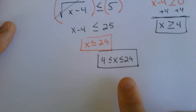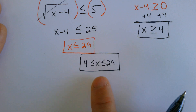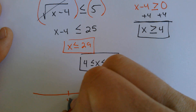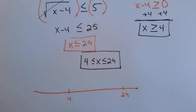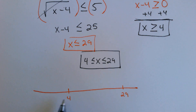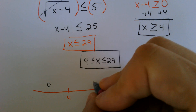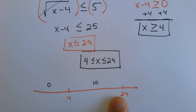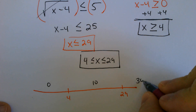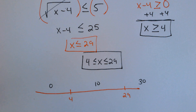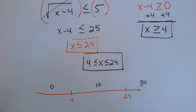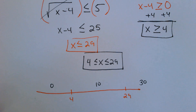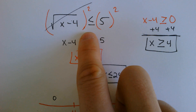However, this is not going to work every single time, and you need to do something called a number line test. You need to put 4 on the number line and 29 on the number line. Depending on the complexity of the problem, you would need to test out all three zones. So you would need to pick out a number smaller than 4, like 0; a number in between 4 and 29, like 10; and a number bigger than 29, like 30. You need to test all three out to see if they work. You should not ever plug in the 4 or the 29, because we want to figure out if it's less than, not equal to.